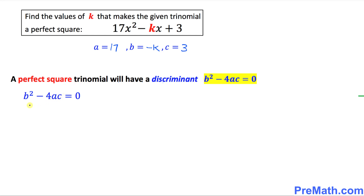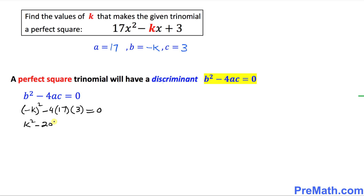So let's calculate b squared minus 4ac. Since b is negative k, this becomes negative k squared, minus 4 times a which is 17, times c which is 3. We set it equal to 0. Simplifying, this becomes k squared minus 204 equal to 0.